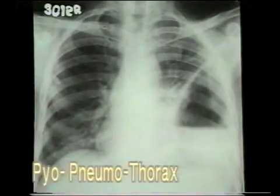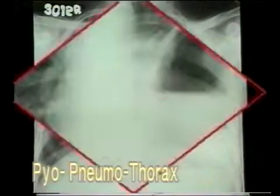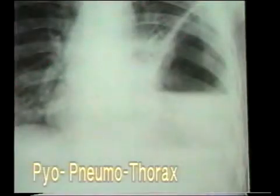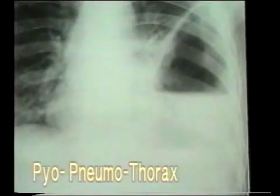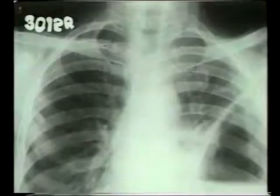Note in this x-ray of loculated pyopneumothorax that the ribs are not seen through the fluid and note the thick fibrosed lung border. Pyopneumothorax is often loculated due to formation of adhesions.